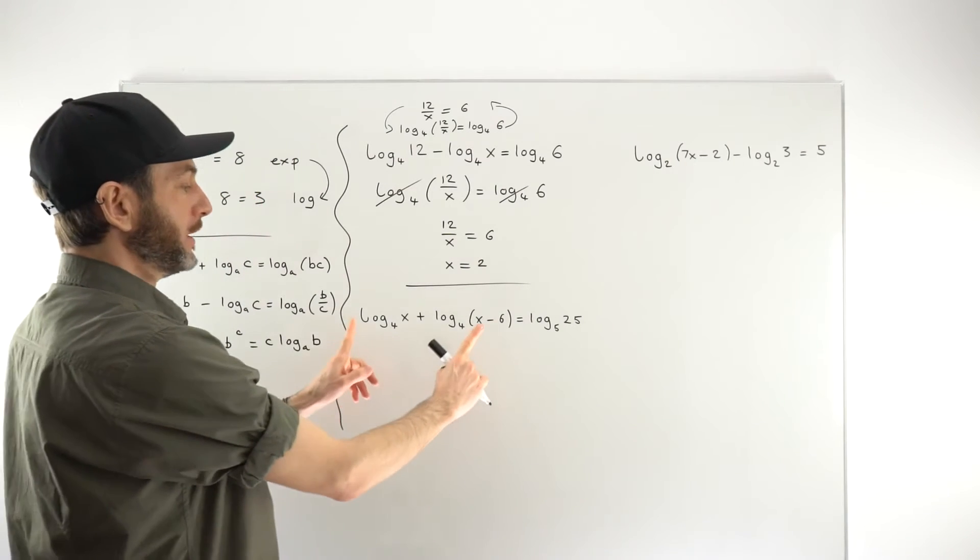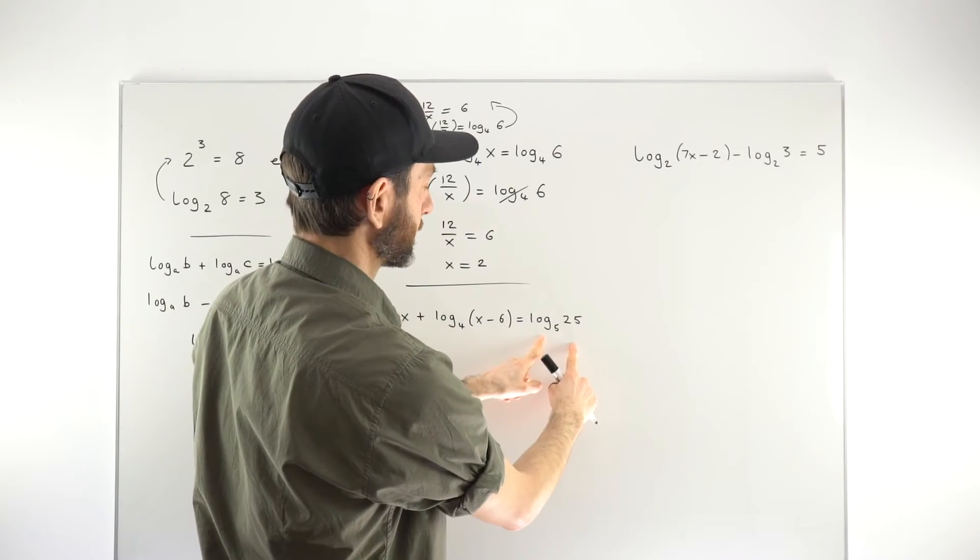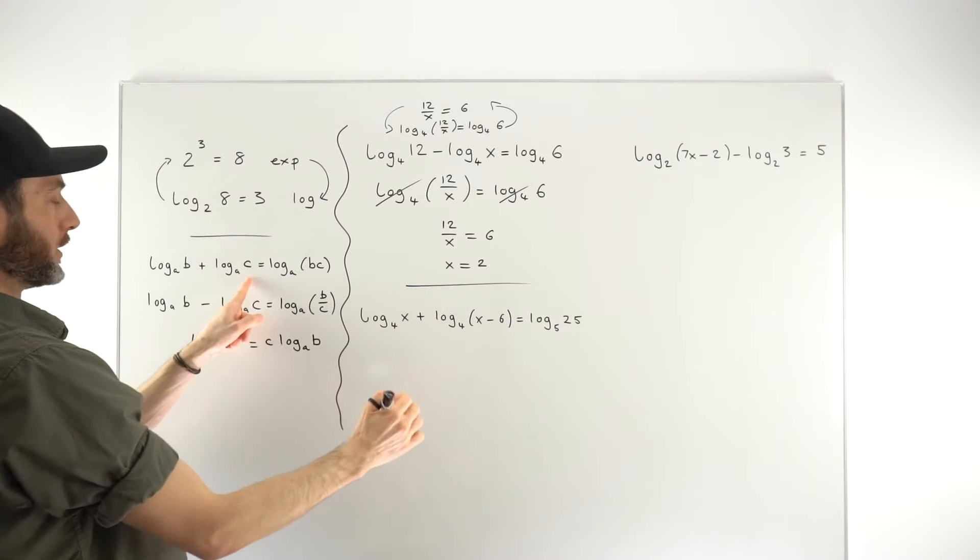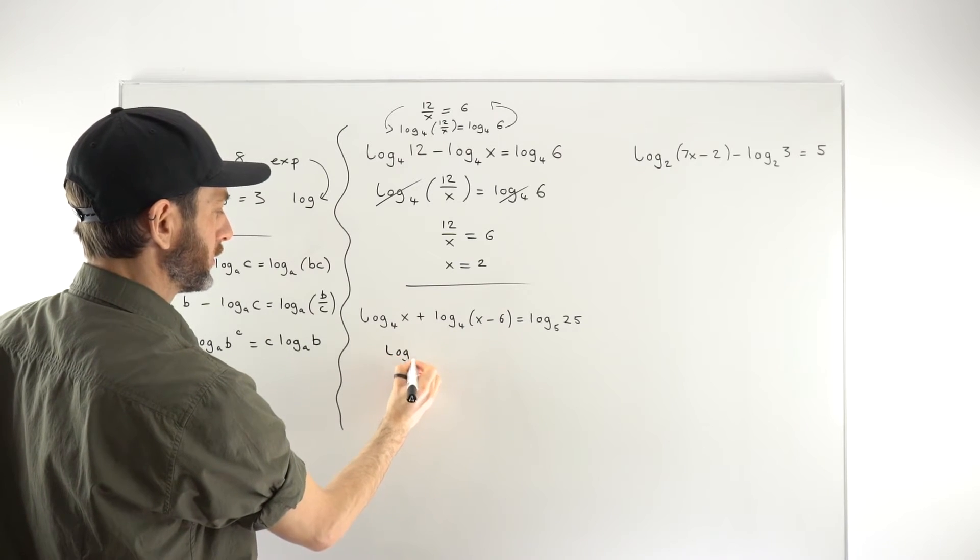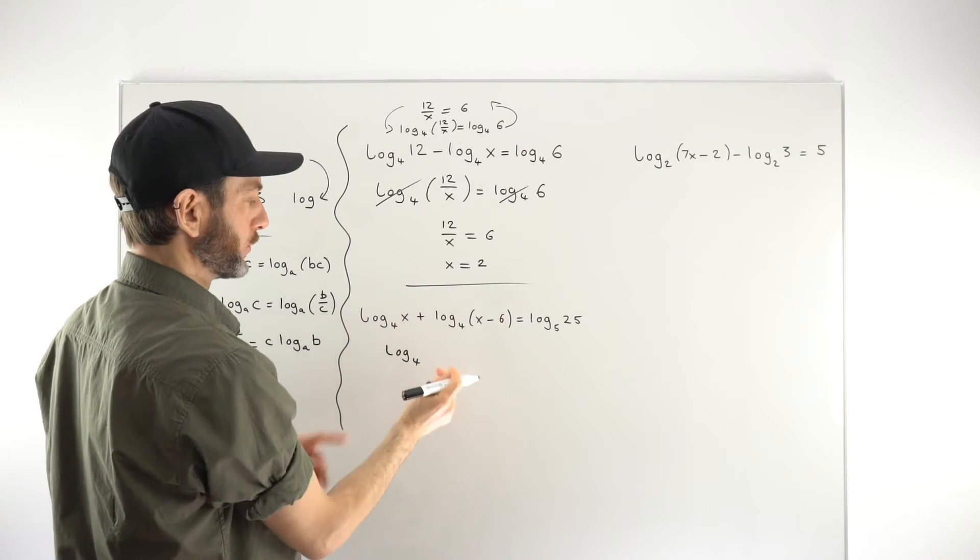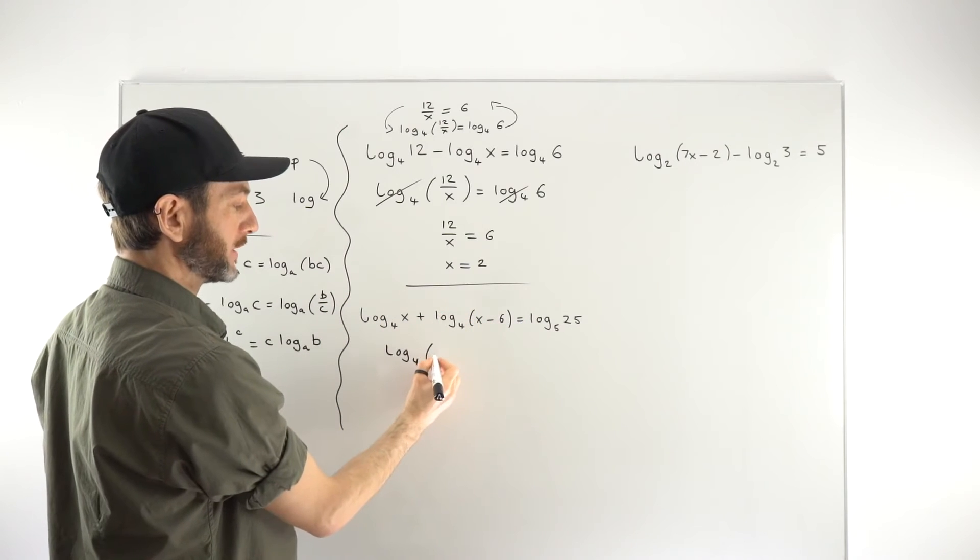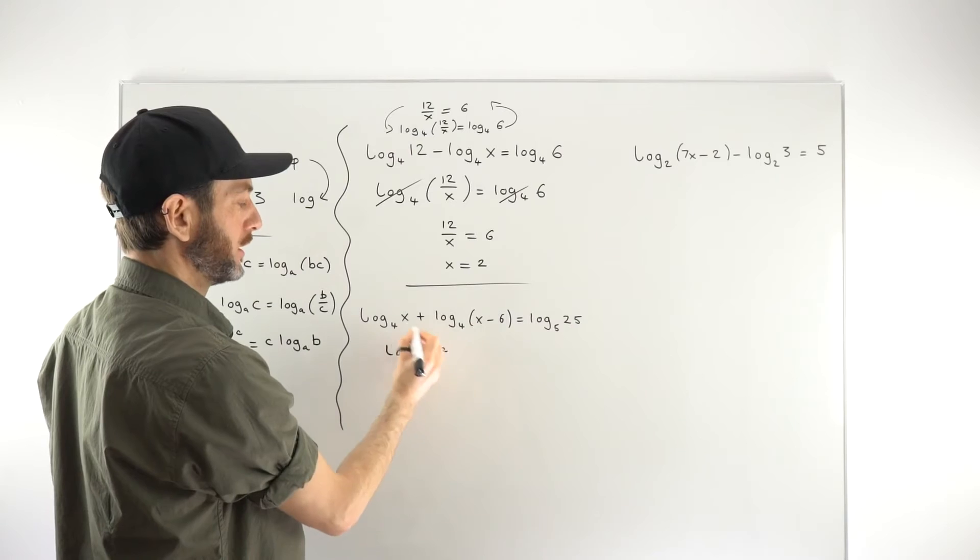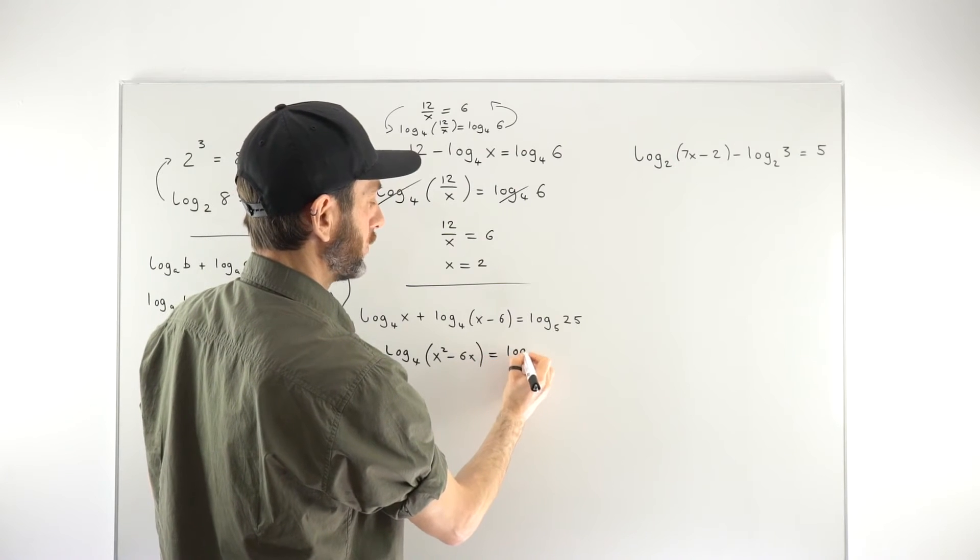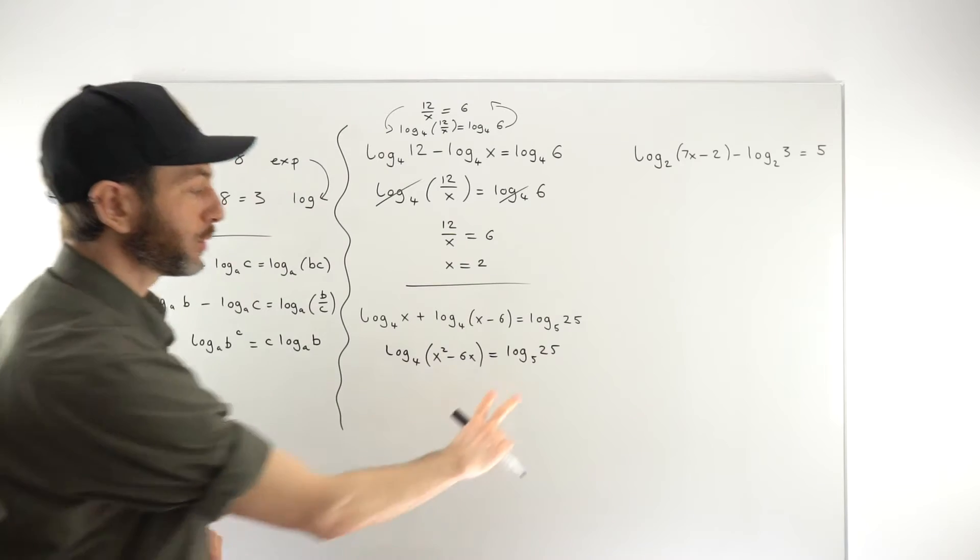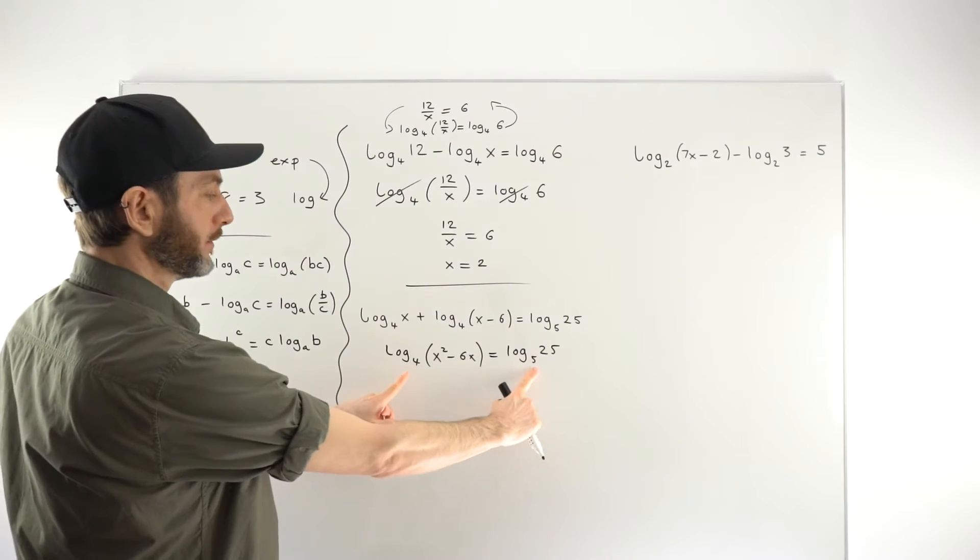Let's take on this guy. So notice here the left-hand side is in the format that matches the first rule. The right-hand side is a different type of base number. But let's go ahead and start by using this rule here, and then we'll think about this term. So we're adding our two logs. We've got the option to turn these into log to base 4 of the product of those terms. So it's this times this. There's different ways you could do that. You could just write them next to each other. I'm going to go ahead and multiply them together. So x times x gives you x squared. x times negative 6 gives you negative 6x. I'm just going to leave it like that.